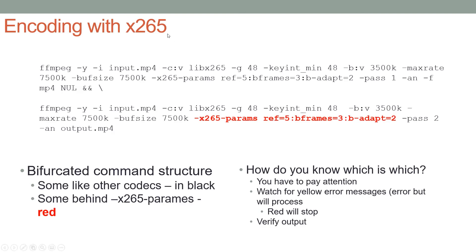When coding with x265 and FFmpeg, recognize that there's a bifurcated command structure. Some parameters are just like other codecs — g for GOP size, keyframe minimum for the minimum keyframe interval, bitrate video, max rate — those are the same. But some other parameters have to be placed behind the x265-params flag, otherwise they won't work.